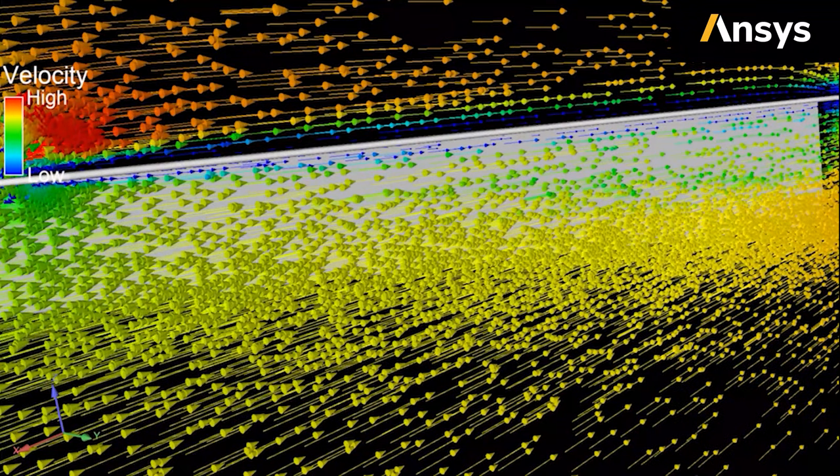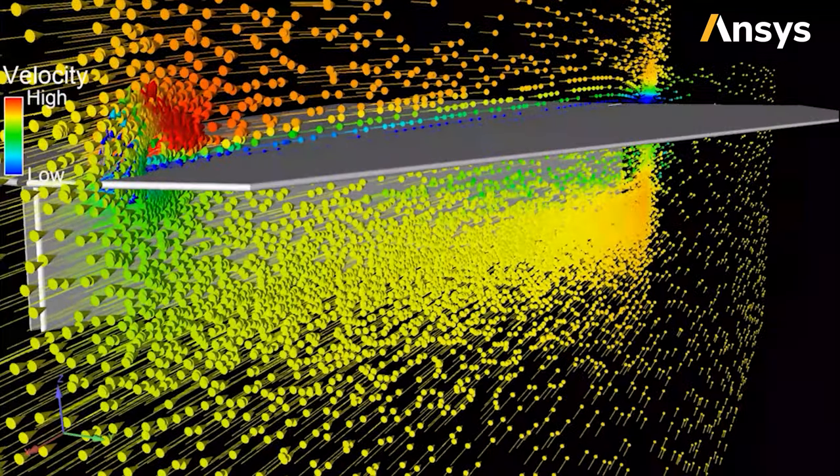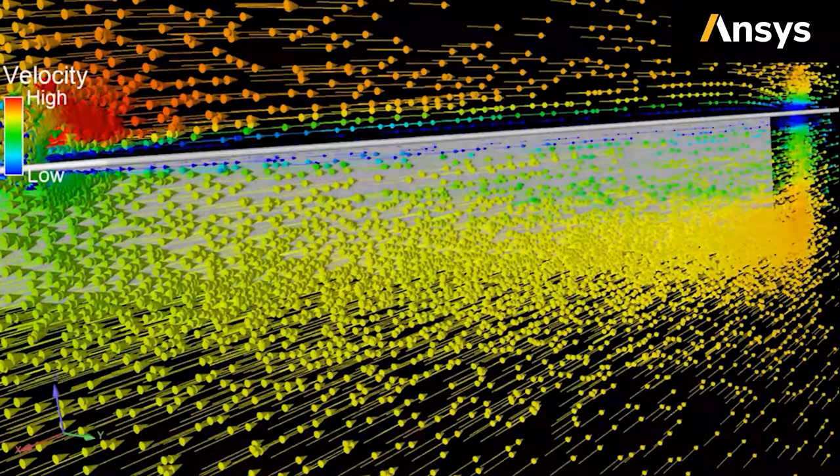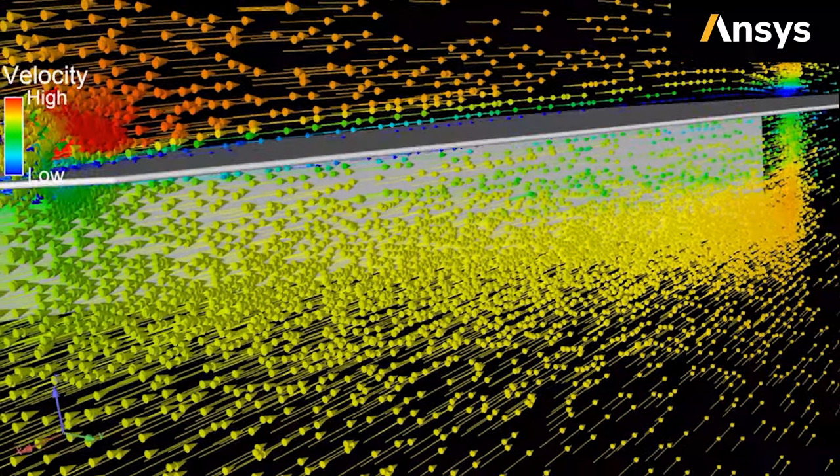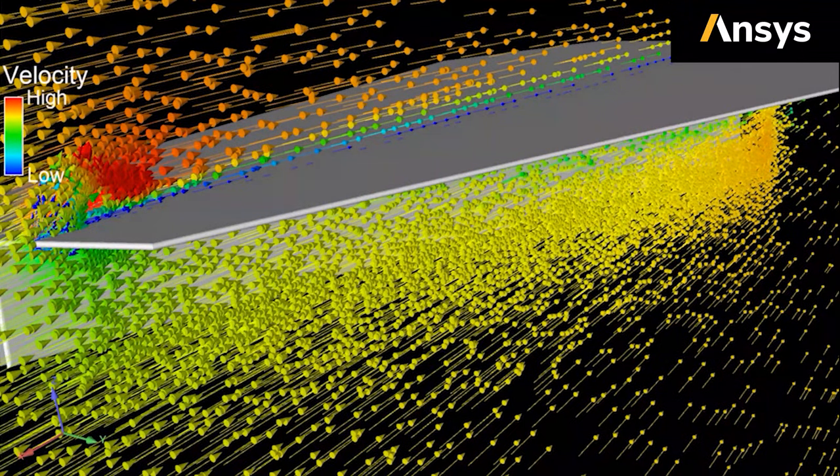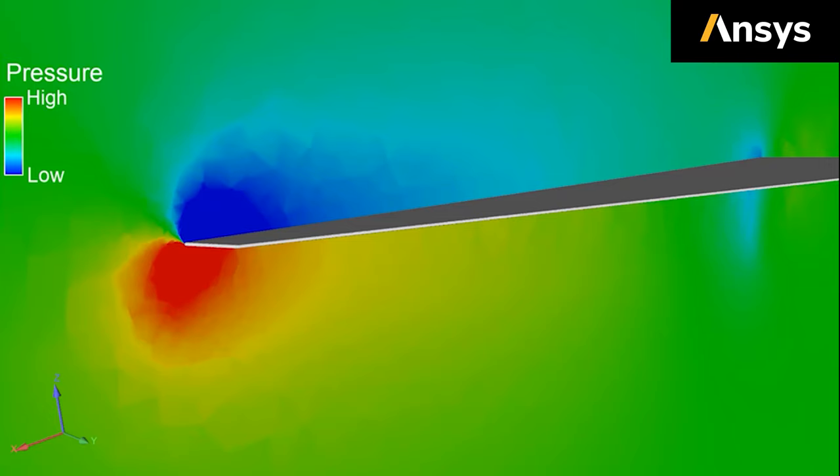The air at the bottom slows down since the plane acts as an obstacle. This increases the fluid pressure. On the top side, the fluid accelerates to bend and follow the shape of the wing. This reduces the air pressure. We can better see this if we plot the pressure on the wing. Similar to the velocity, red means high and blue means low. The bottom side of the wing is subjected to high pressure while the top experiences a lower pressure. This is how lift is generated.